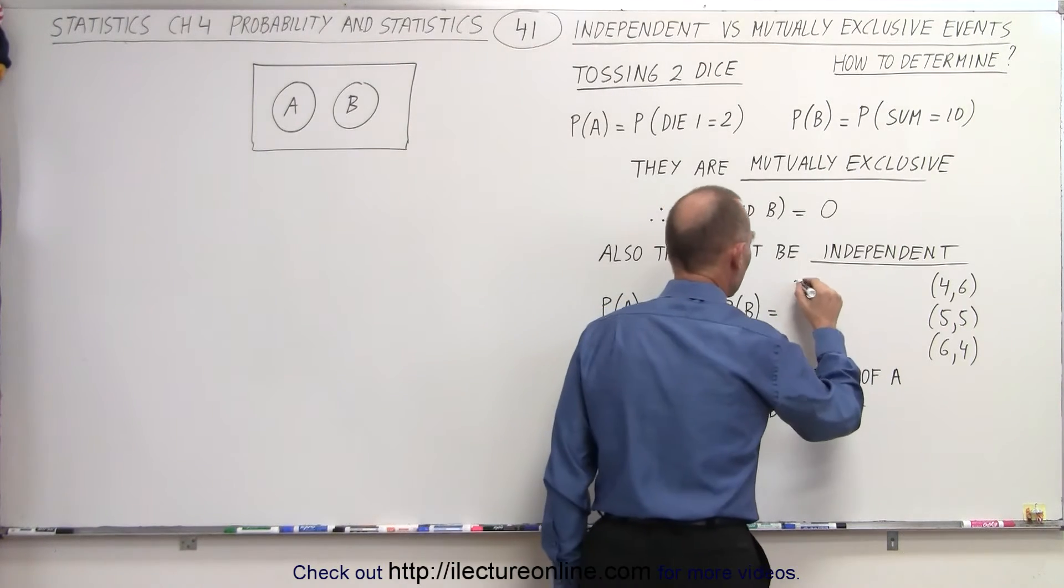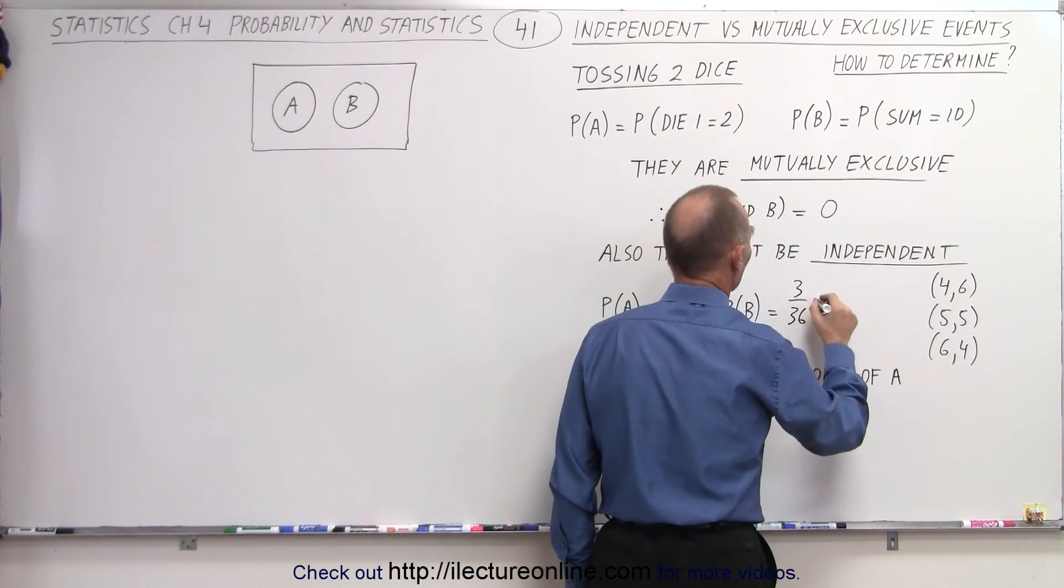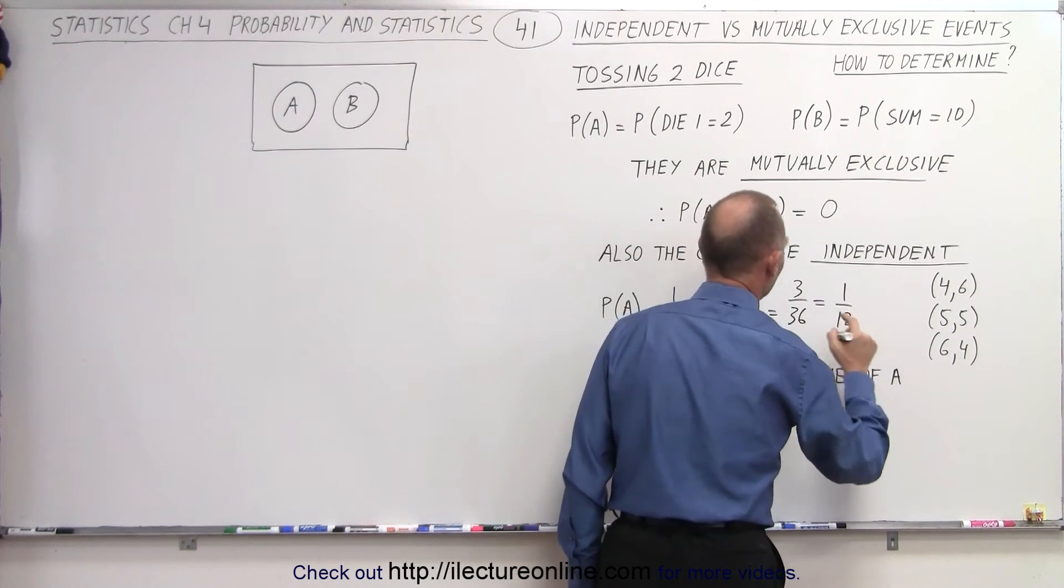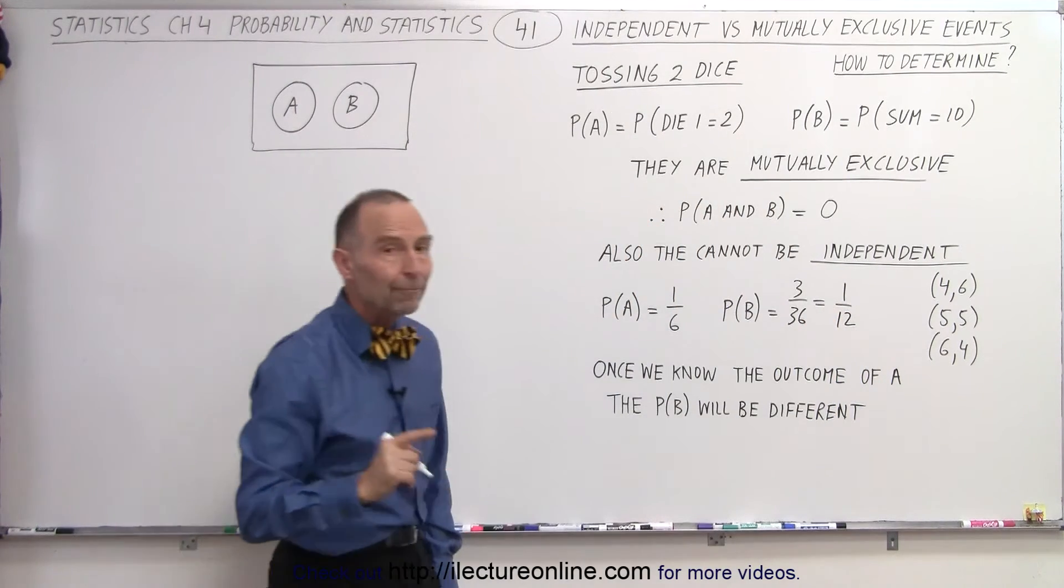only 3 of those can add up to 10. And that means that 3 out of 36, which is equal to 1 out of 12, is the probability that B can occur.